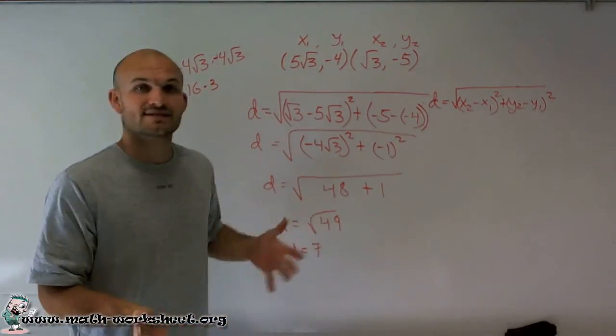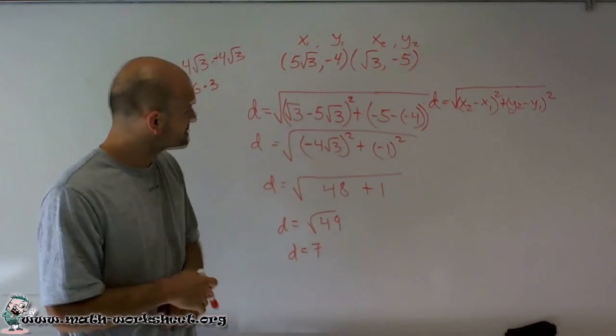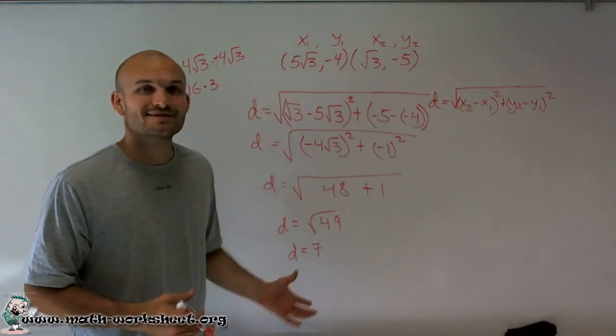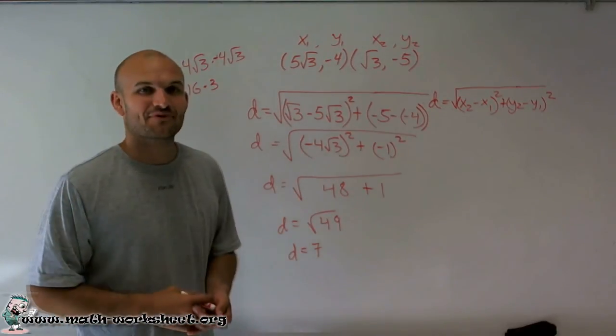Because remember, distance always has to be in the positive quantity. So therefore, our distance in this example is 7. So I hope that helps you out, and I hope we made a good example for you. Thanks for watching.